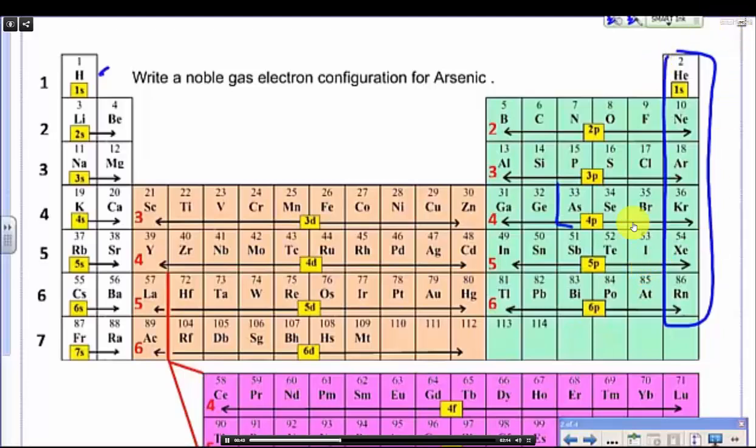In this case, arsenic is right here. So the previous noble gas will be argon. Instead of starting at hydrogen, we're starting from argon.